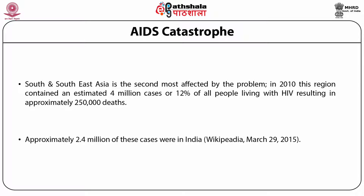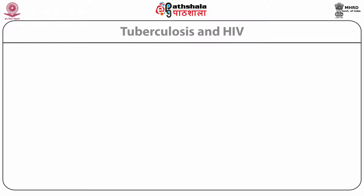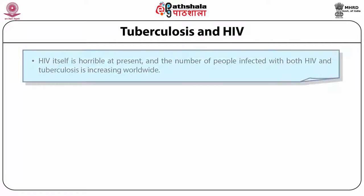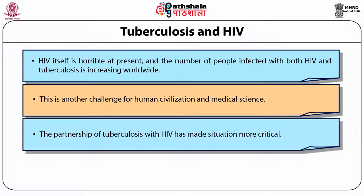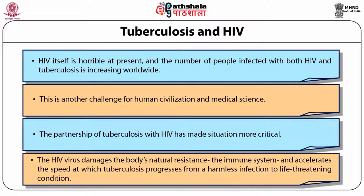Tuberculosis and HIV — HIV itself is a serious problem, and the number of people infected with both HIV and tuberculosis is increasing worldwide. This is another challenge for human civilization and medical science. The partnership of tuberculosis with HIV has made the situation more critical. The HIV virus damages the body's natural resistance — the immune system — and accelerates the speed at which tuberculosis progresses from a harmless infection to a life-threatening condition.